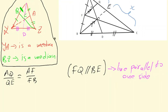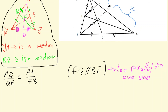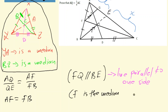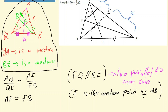Moving along — on the diagram, since I've already explained about the medians, we can see that AF equals FB. The reason for that is: F is the midpoint of AB. I've already explained how this came about so I don't have to repeat it here.